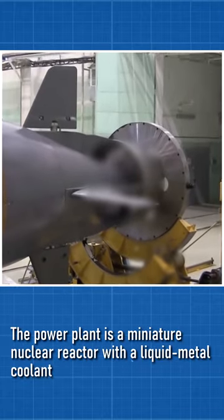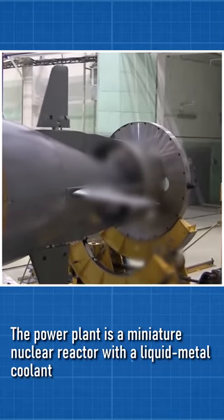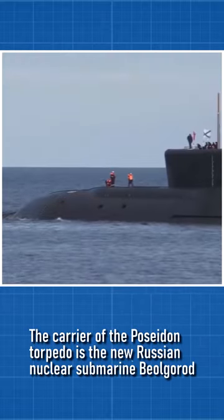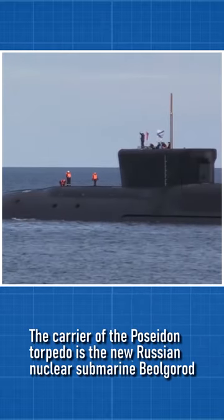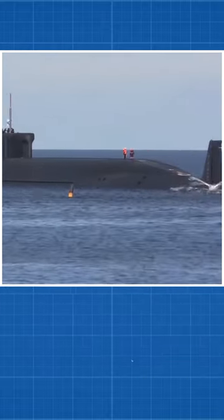The power plant is a miniature nuclear reactor with a liquid metal coolant. The carrier of the Poseidon torpedo is the new Russian nuclear submarine Belgorod.